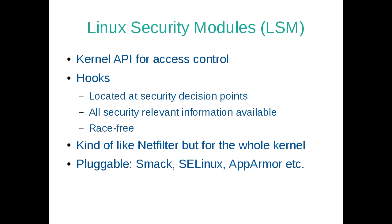The Linux Security Modules API, or LSM, is what SELinux hooks into. It's a kernel API primarily for access control systems, based on hooks located throughout the kernel at security decision points. When a security-relevant operation is occurring, we collect information about who's doing what to whom and present that in a race-free way through the API to the plugged-in security modules. The capabilities code was one of the first LSMs. If you're familiar with Netfilter but not LSM, think of it like Netfilter but for the kernel — not just packets — and it's pluggable, so something like SELinux is analogous to iptables.